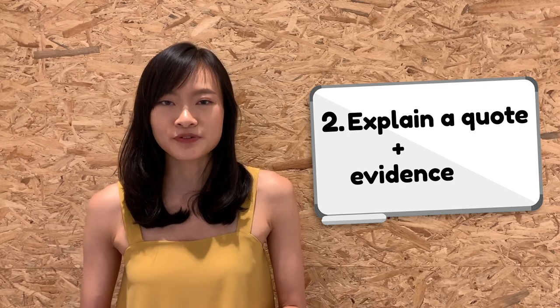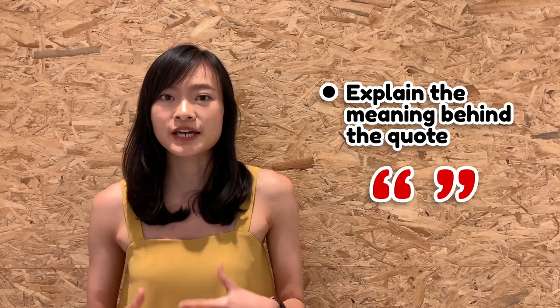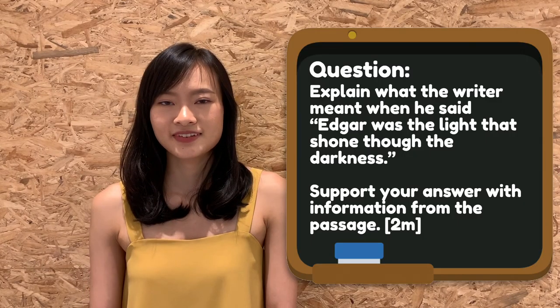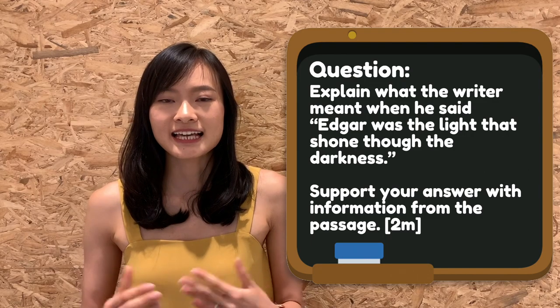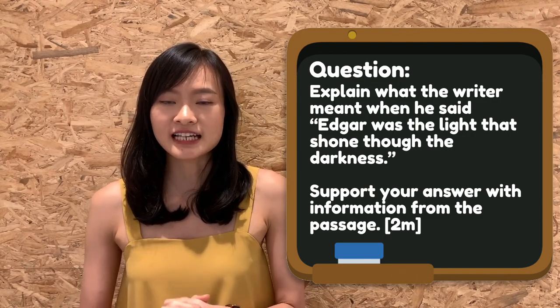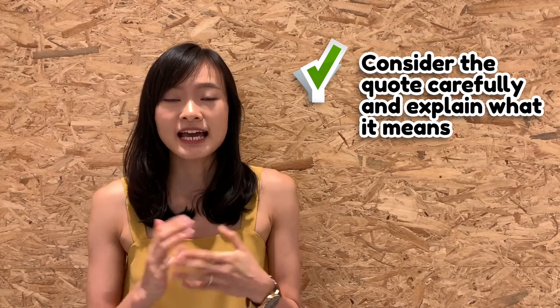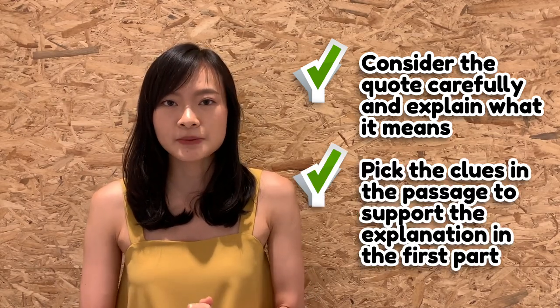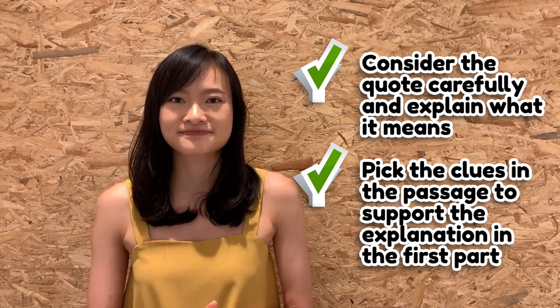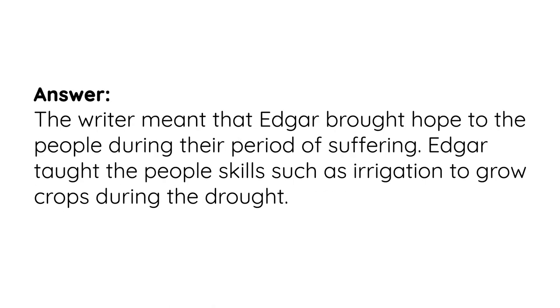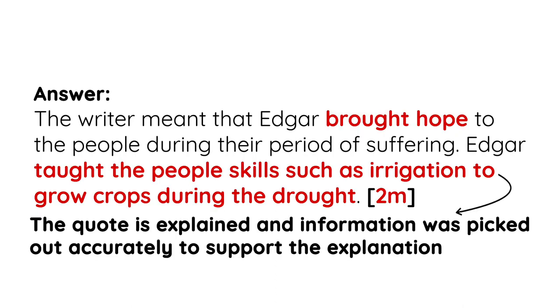The second type is an explain a quote plus support with evidence question. Such a question requires you to explain the meaning behind the quote. Consider the question: explain what the writer meant when he said, 'Edgar was the light that shone through the darkness.' Support your answer with information from the passage. For such questions, students must consider the quote carefully and explain what it means, then pick the correct clues from the passage to support the explanation. For example: 'The writer meant that Edgar brought hope to the people during their period of suffering. Edgar taught the people skills such as irrigation to grow crops during the drought.' Here, the quote is explained and information is used accurately to support the explanation.